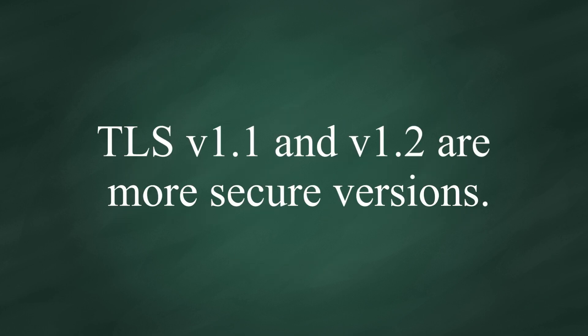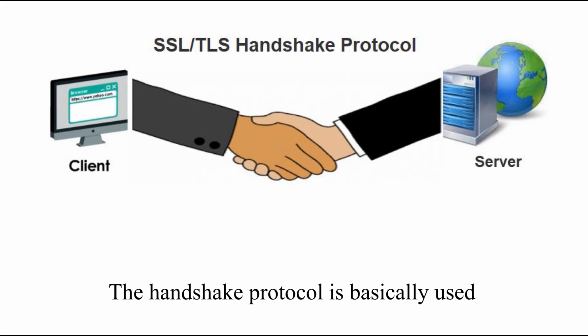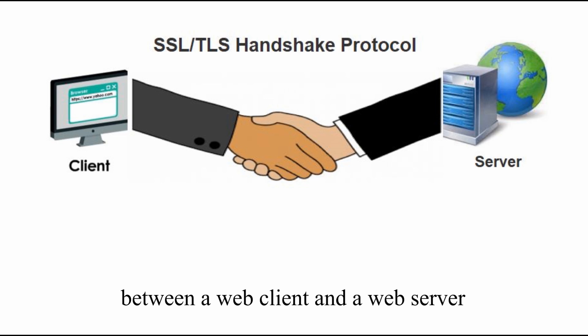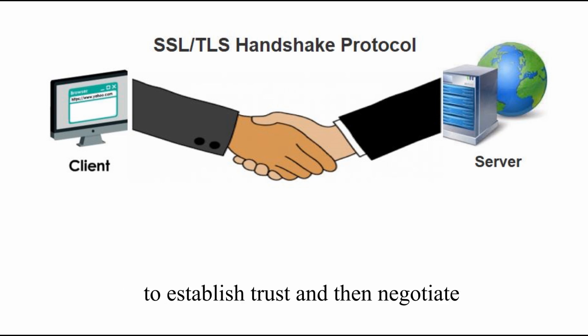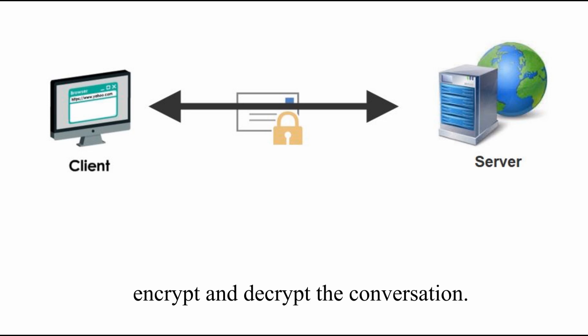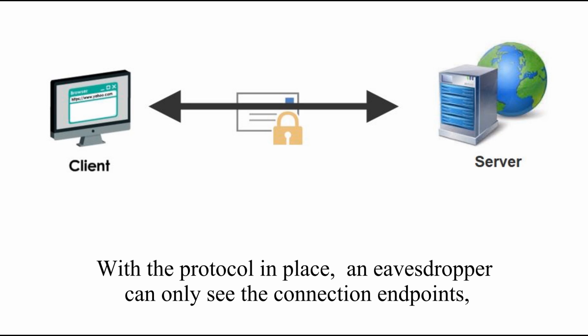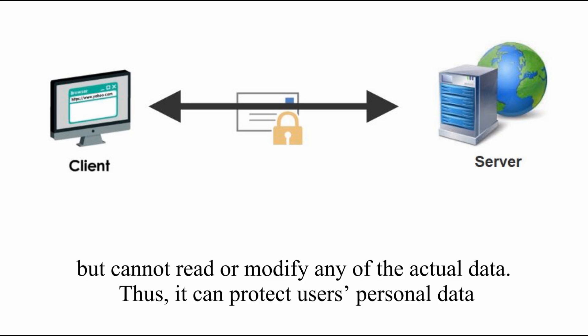TLS version 1.1 and version 1.2 are more secure versions. The Handshake Protocol is basically used between a web client and web server to establish trust, and they negotiate what secret key should be used to encrypt and decrypt the conversation. With the protocol in place, an eavesdropper can only see the connection endpoints,